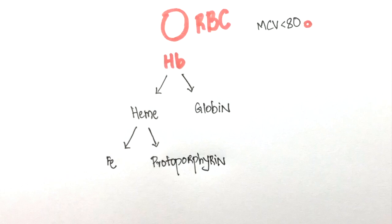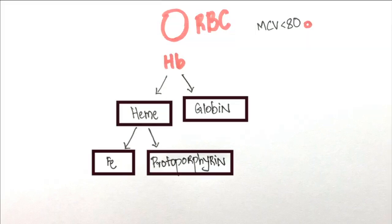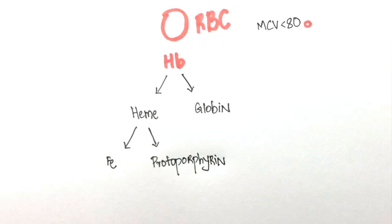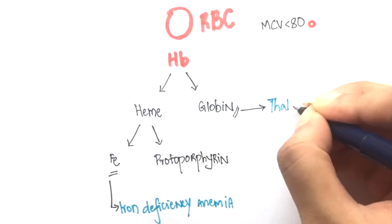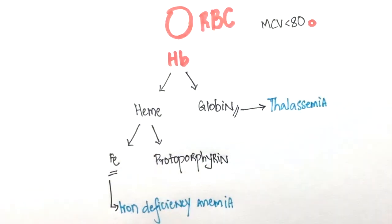Microcytic anemia can arise if any of these components are deficient or missing. If iron is deficient, it gives rise to iron deficiency anemia. In thalassemia, there is a decrease in the synthesis of the globin chain of hemoglobin.